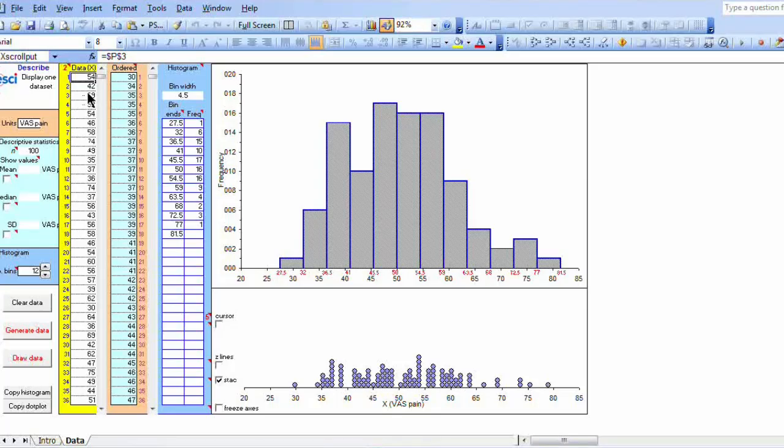Let's suppose we've got 100 measurements of pain from 100 patients. And here they are just simply typed in as a list of numbers: 54, 42, 69. Here we've got the same numbers ordered from the lowest to the highest: 30, 34, 35.